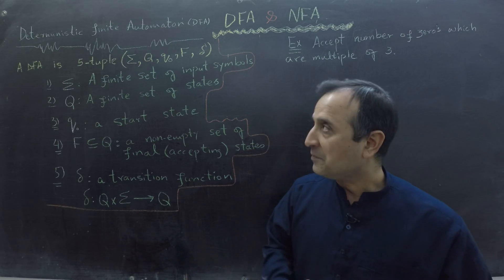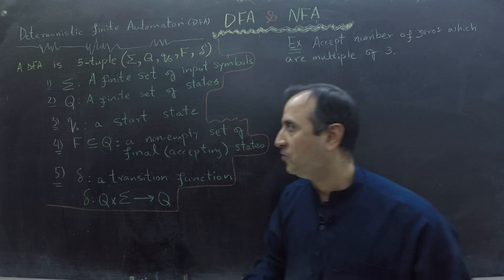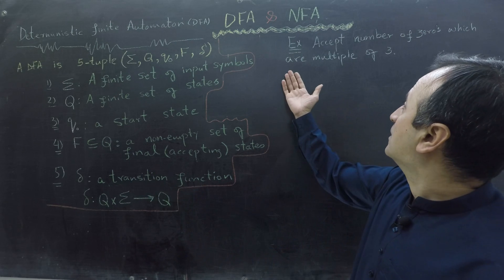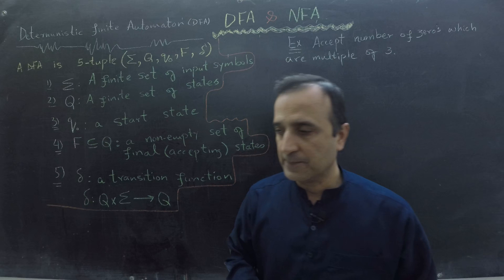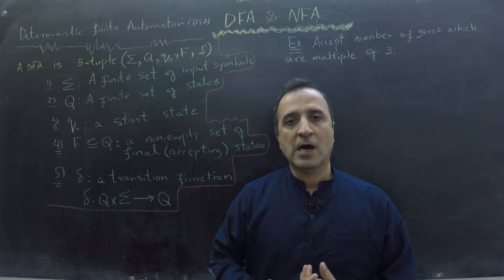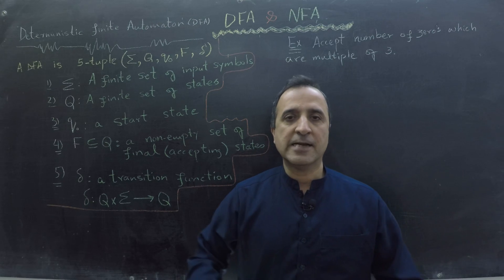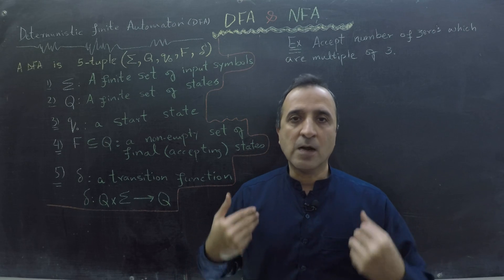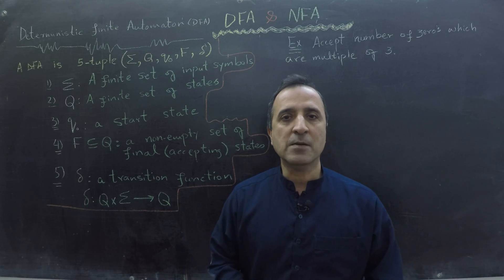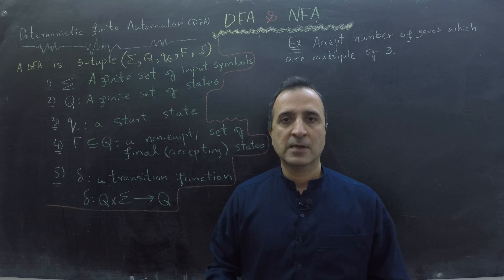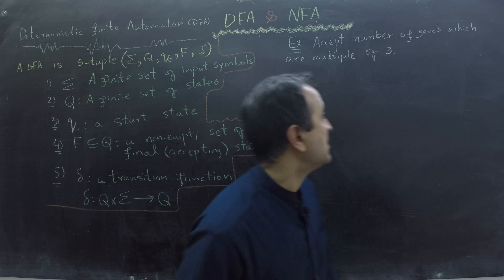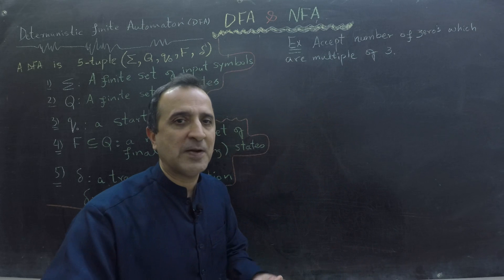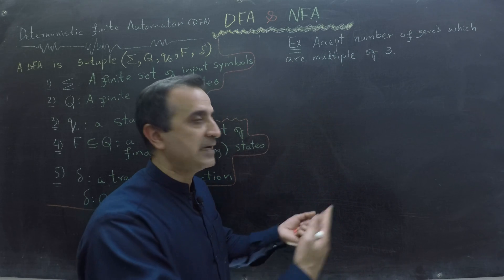The example I'm going to follow for this definition is: we have to make the DFA for a machine that accepts zeros and ones, but the number of zeros must be a multiple of three. That means this machine will accept this language. The strings accepted by this machine are called its language.